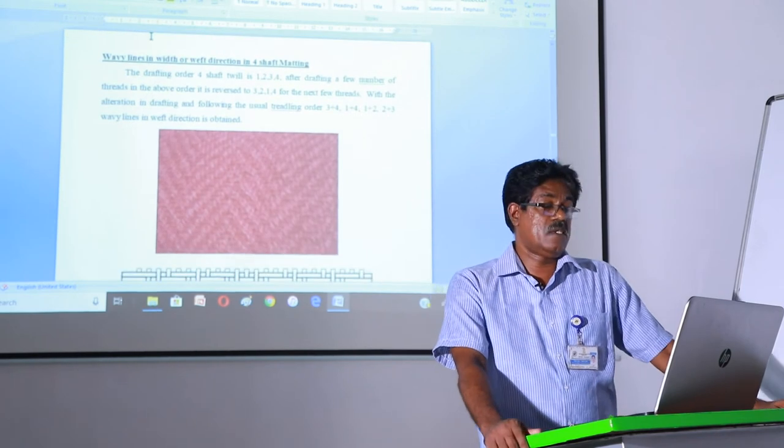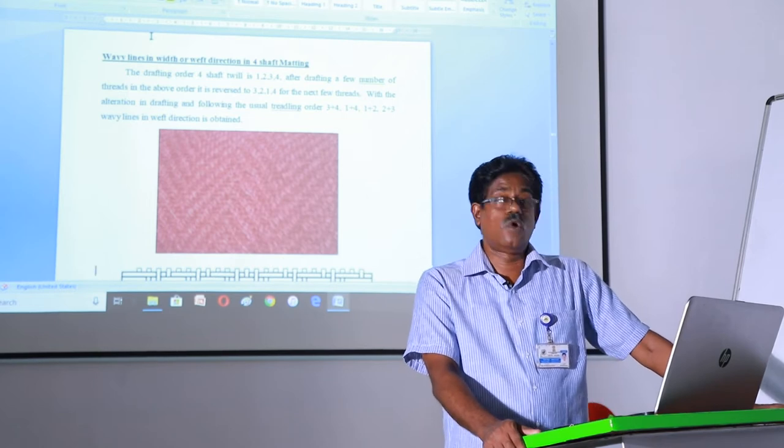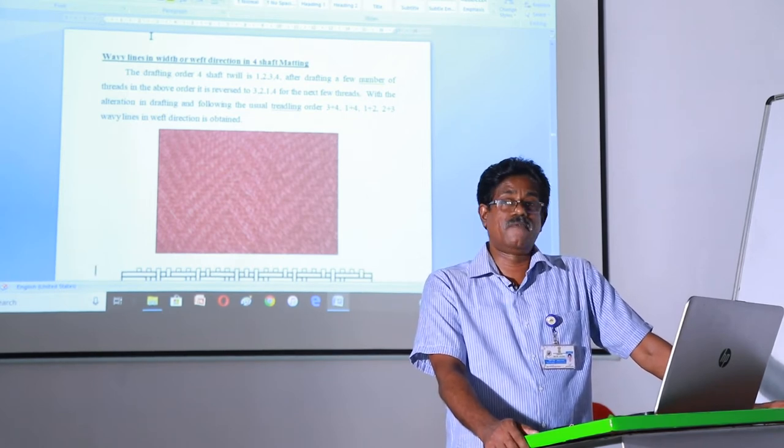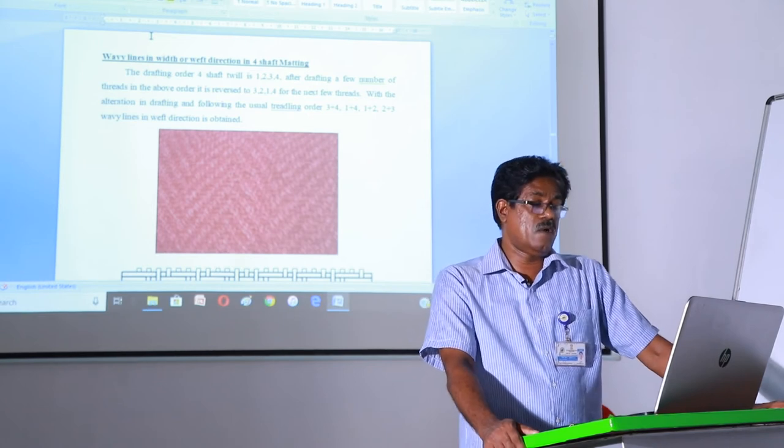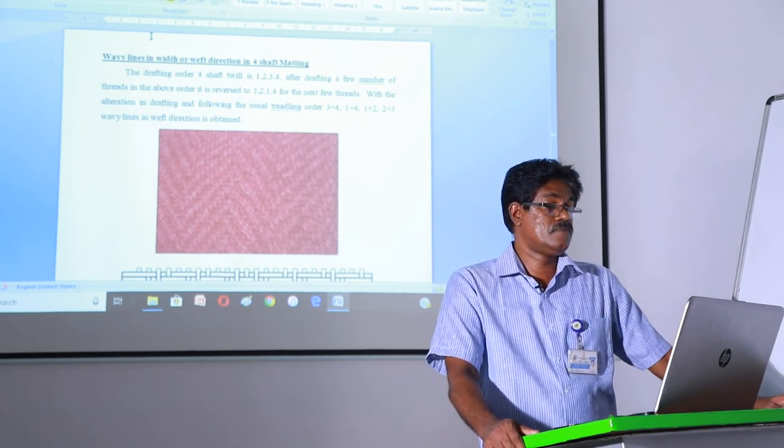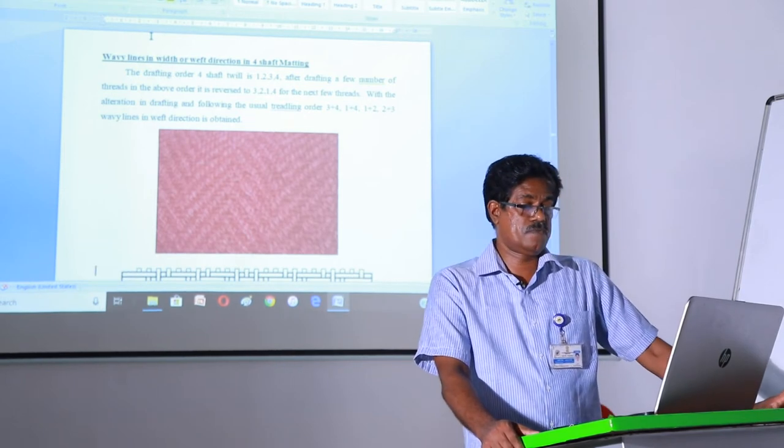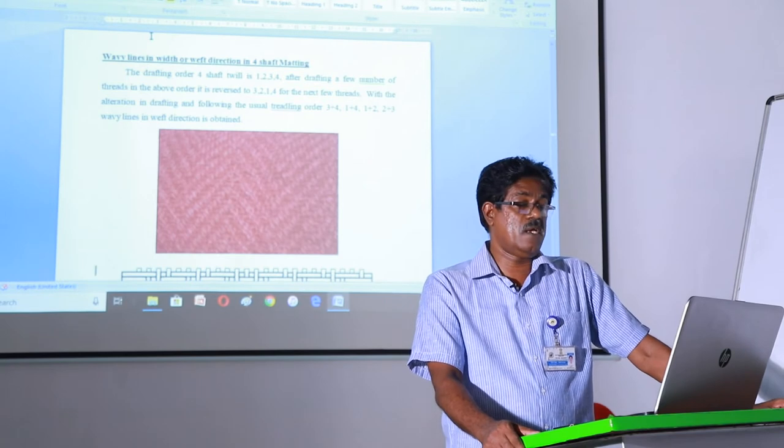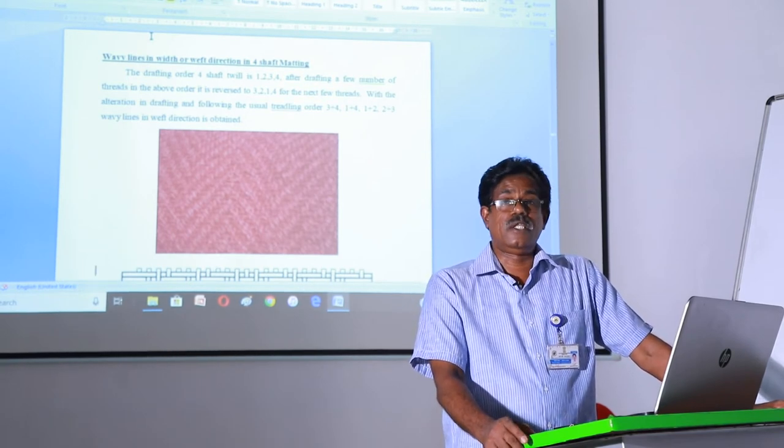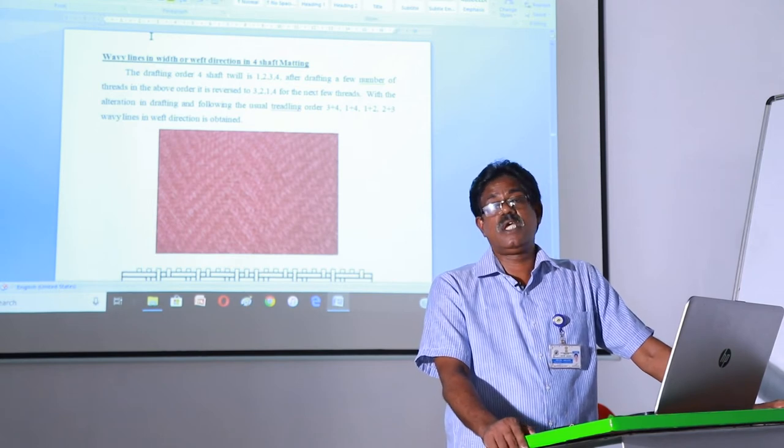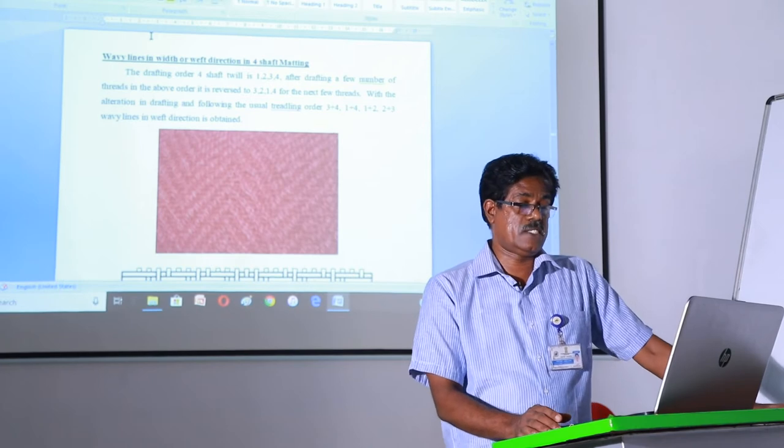Wavy lines in width way or warp direction in four shaft matting. The drafting order of four shaft twill is one, two, three, four. After drafting a few number of threads in the above order, it is reversed to three, two, one, four for the next few threads.